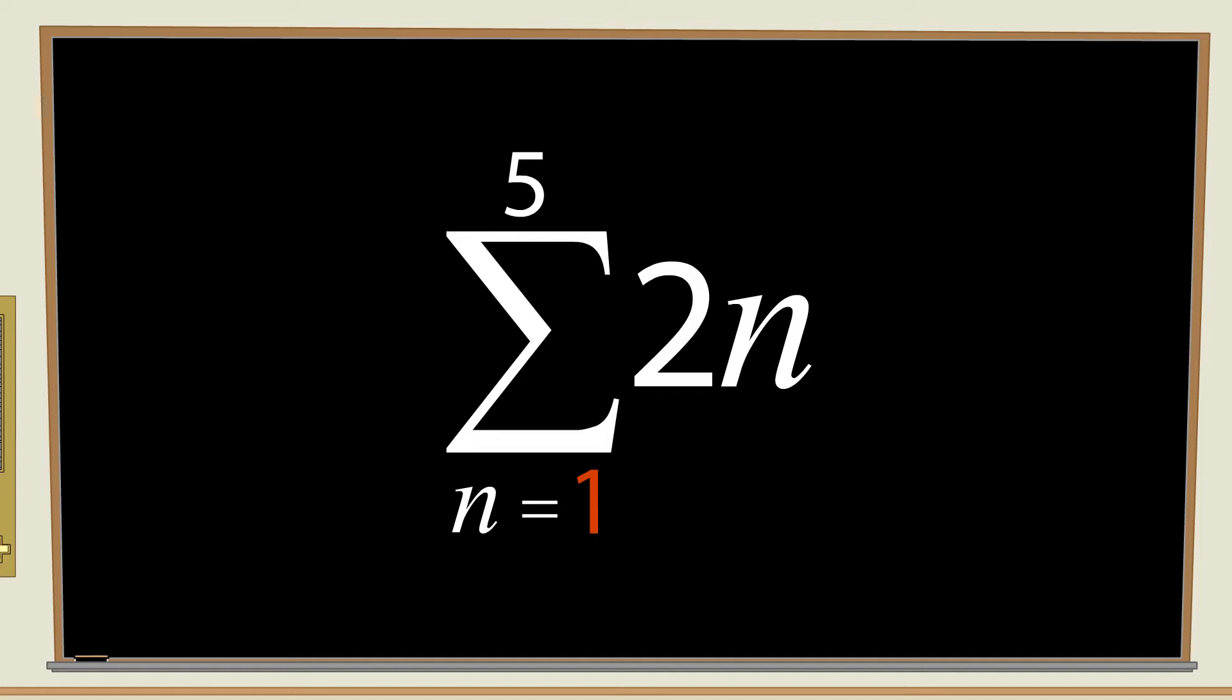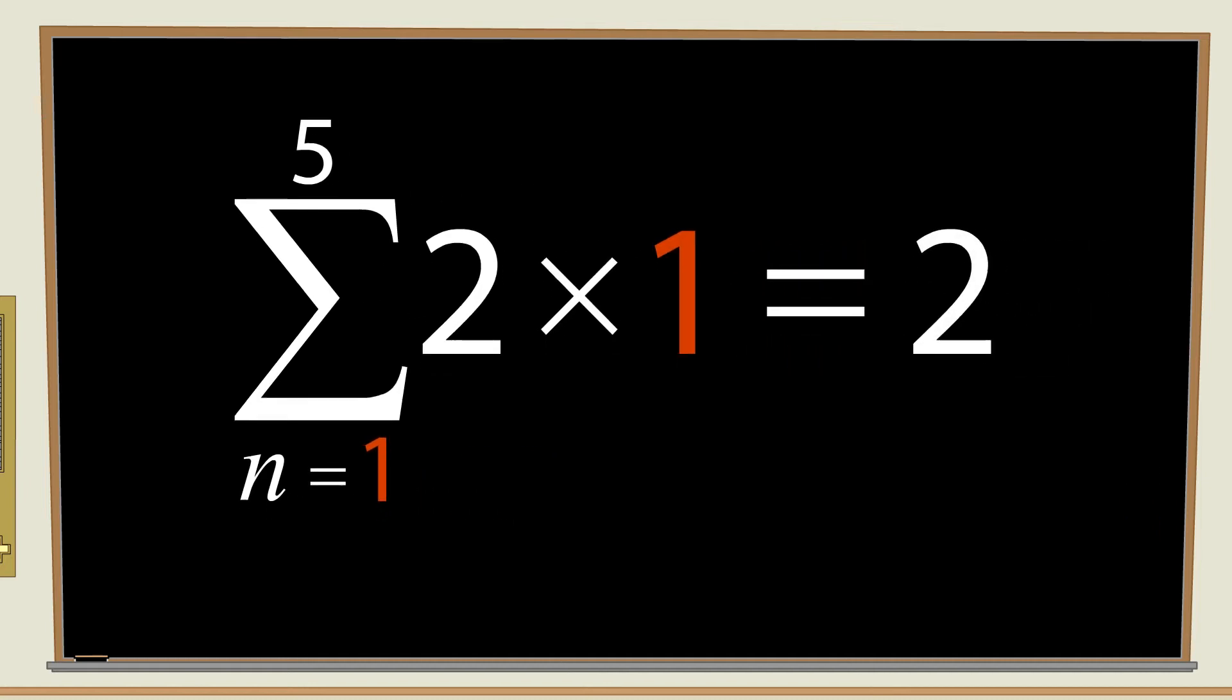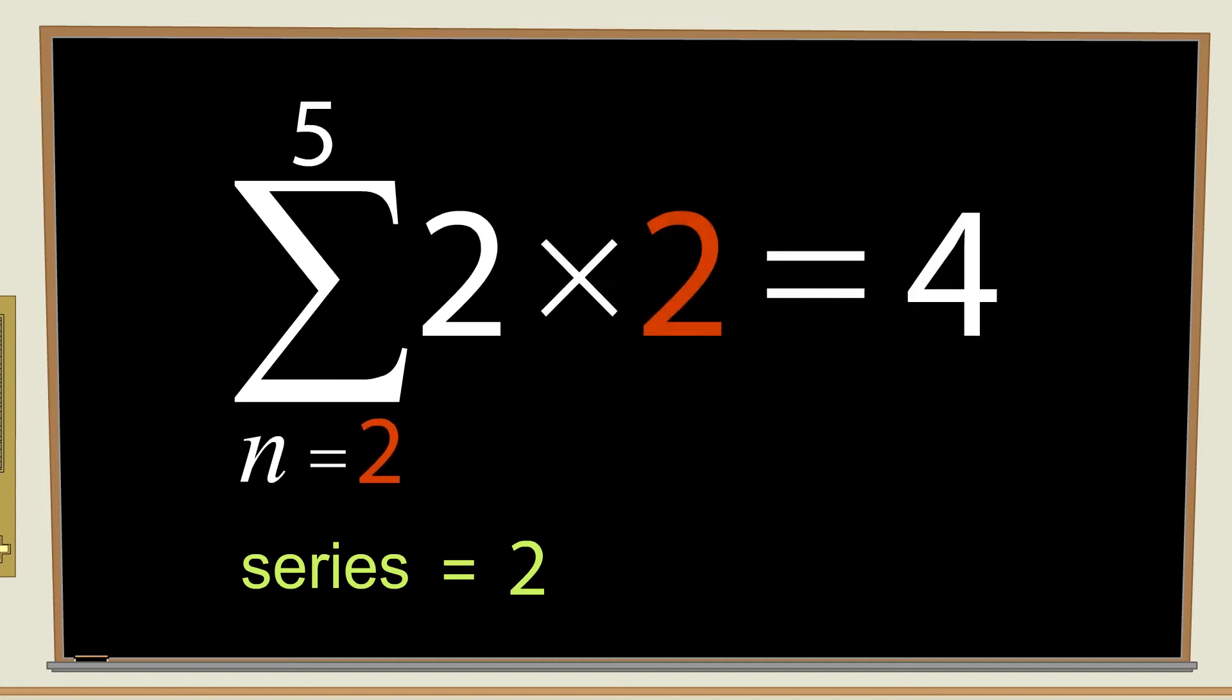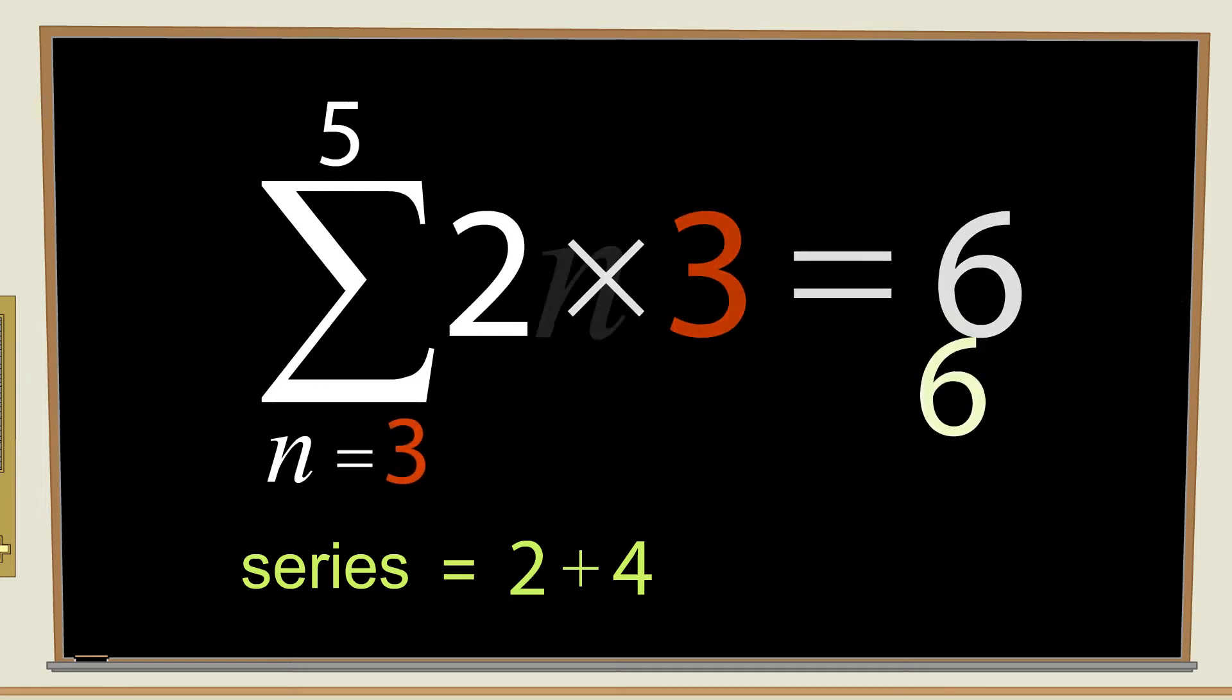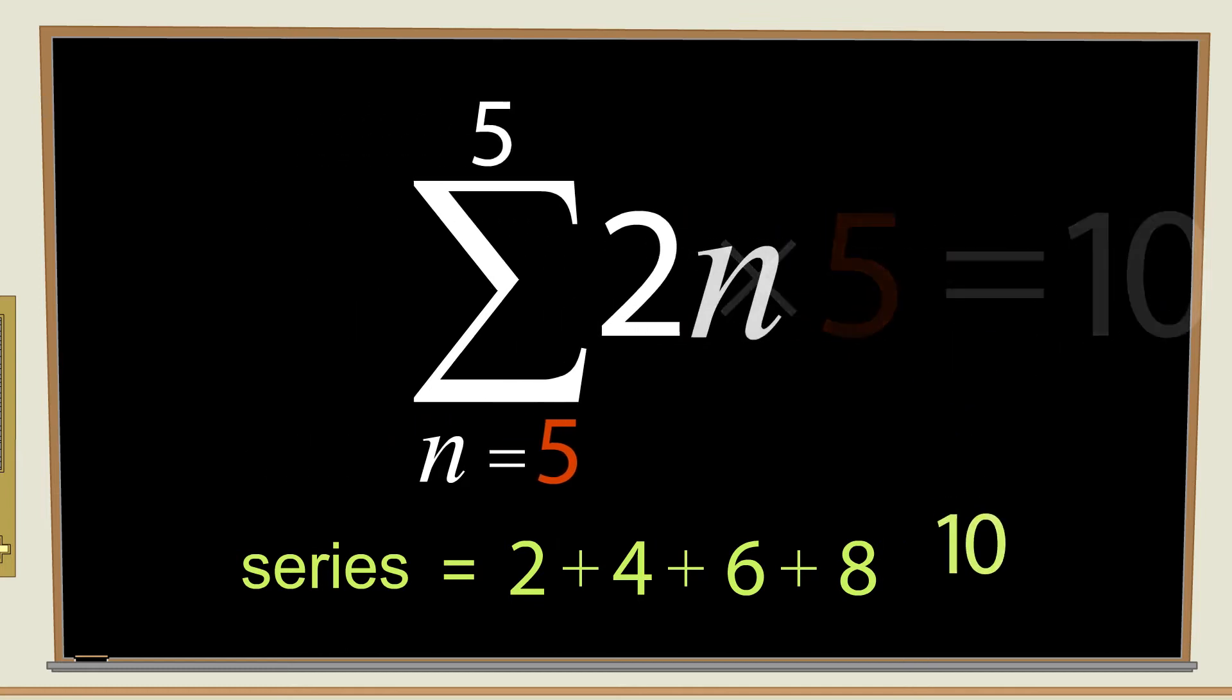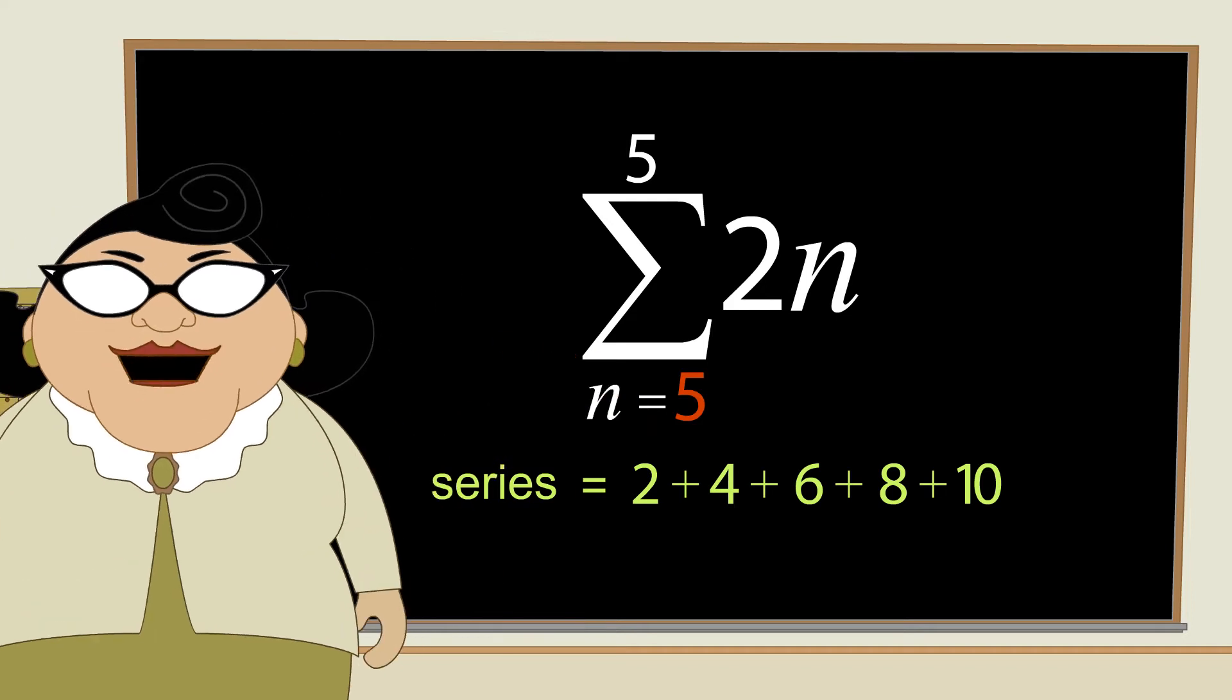This value of n is then used to calculate the first term of the series. Since n is 1, 2n is equal to 2 times 1, or 2. So, 2 is the first term in the series. Then we increase n by 1 and do it again. This calculates the second term of the series. We keep doing this until n finally reaches the value at the top of the summation symbol. So, this summation notation is another way of writing these five terms added together.